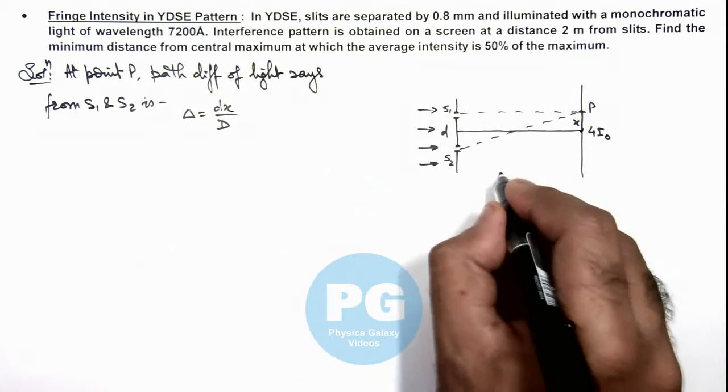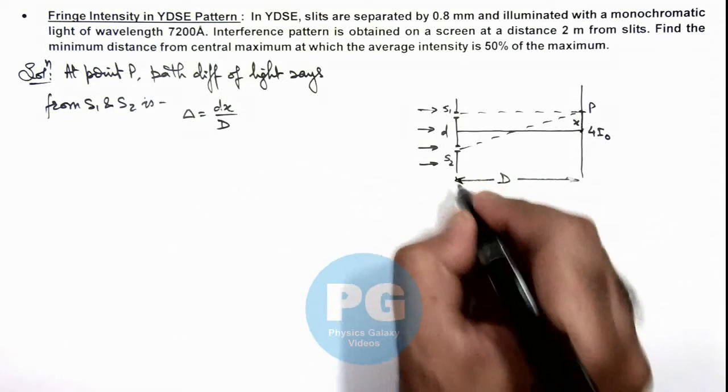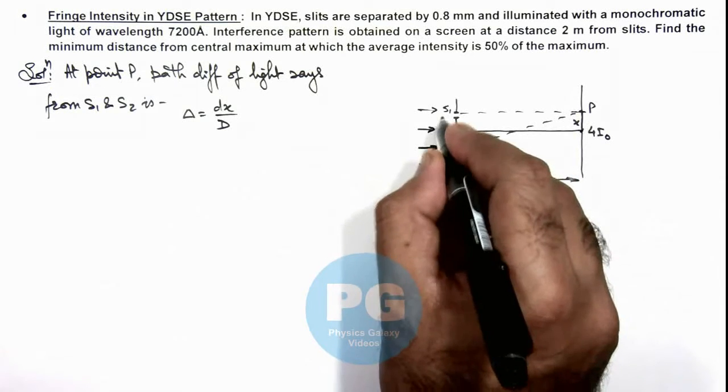Where capital D is the separation between slit plane and screen, and small d is the separation between the slits.